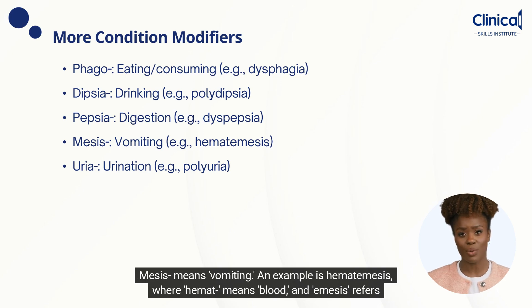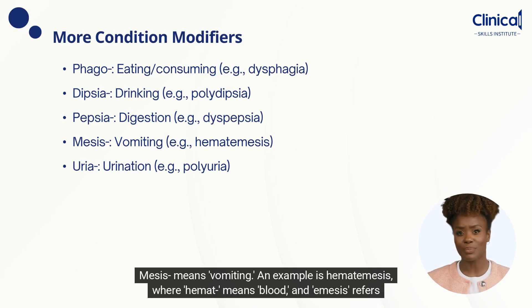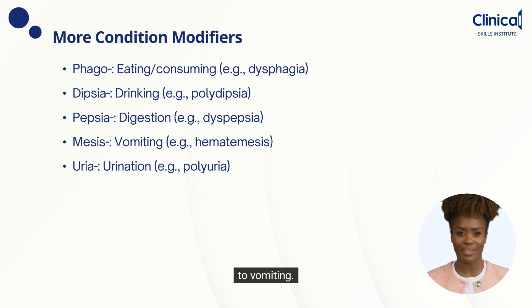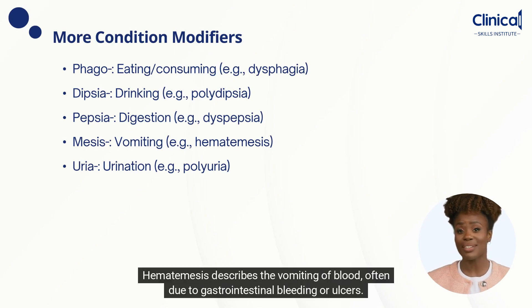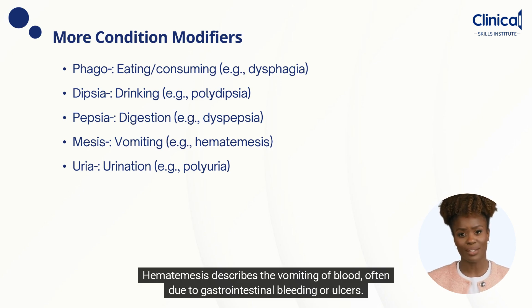Emesis means vomiting. An example is hematemesis, where hemat means blood, and emesis refers to vomiting. Hematemesis describes the vomiting of blood, often due to gastrointestinal bleeding or ulcers.